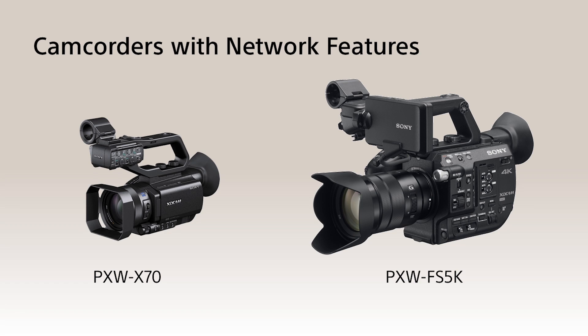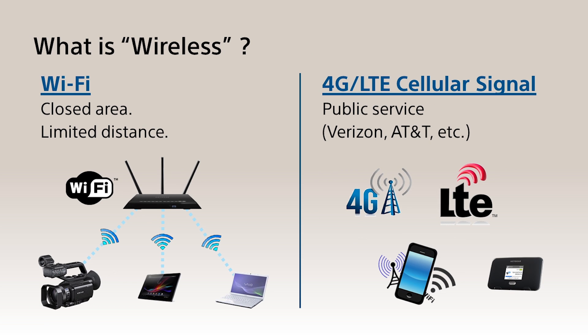In this tutorial video, we will explain the network features of the PXW-X70 and PXW-FS5. These two models have the exact same wireless features in terms of file transfer and live streaming. The type of wireless technology these cameras have is Wi-Fi, which will require a Wi-Fi router to get network access. There is another wireless network interface you can use, which is 4G LTE.